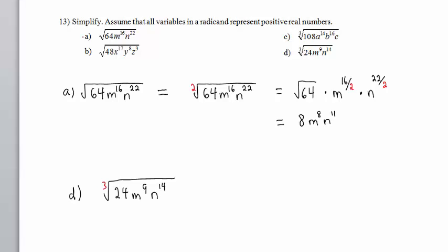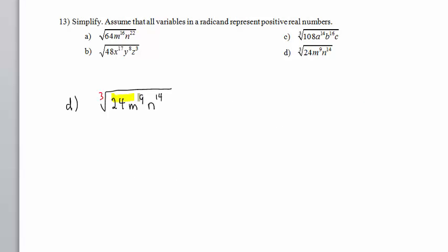Let's move on to Part D. Because the radicand, the stuff inside the radical, consists of multiplied entities, we can multiply 3 cube root radicals.